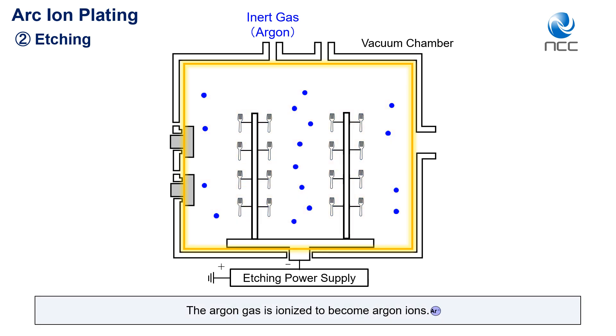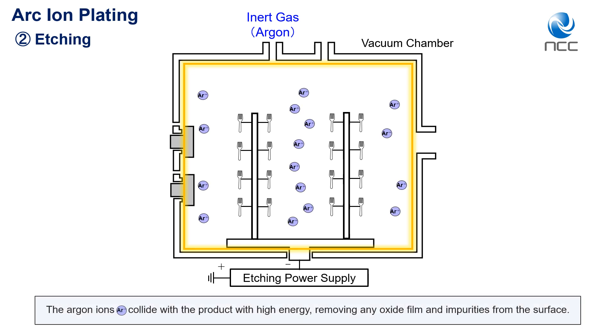The argon gas is ionized to become argon ions. The argon ions collide with the product with high energy, removing any oxide film and impurities from the surface.